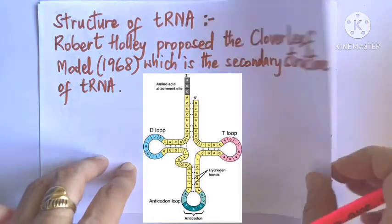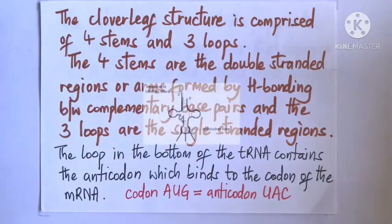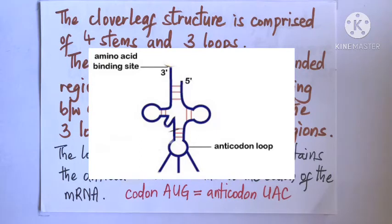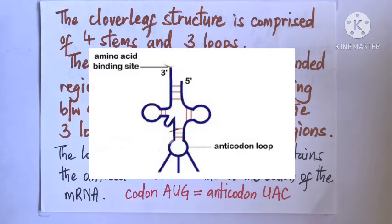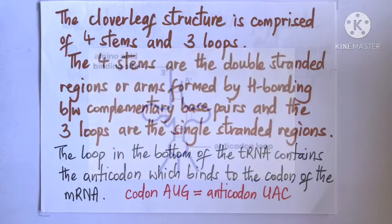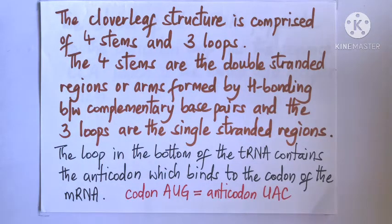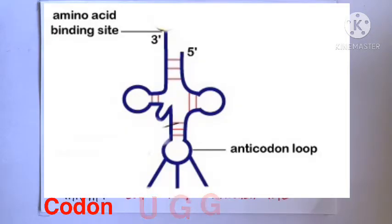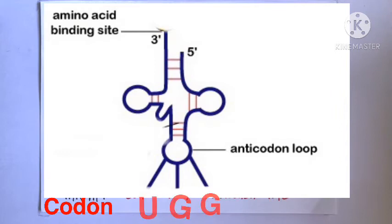Of these three loops, the anticodon loop is at the bottom of the cloverleaf. This loop is important as it contains three nucleotides called the anticodon. It is the anticodon of the tRNA that base pairs with the codon of the mRNA. For instance, a codon AUG on the mRNA binds to an anticodon UAC in the tRNA. So AUG complements UAC. Similarly, if the codon is UGG, the anticodon in the tRNA would be ACC.